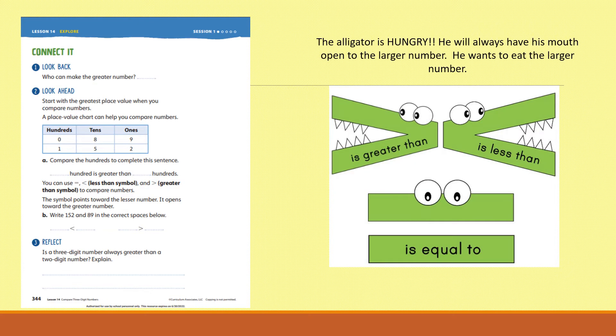Who can make the greater number? We said Kim can make the greater number. And why can Kim make the greater number? Because Kim landed on three digits, and John only landed on two digits. Kim can make a number using the hundreds place, but John can only make a number in the tens place. It says, look ahead. Start with the greatest place value when you compare numbers. A place value chart can help you compare numbers.